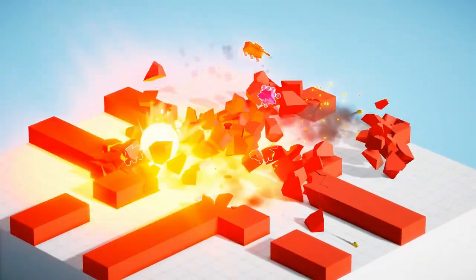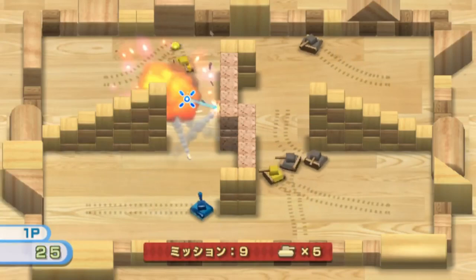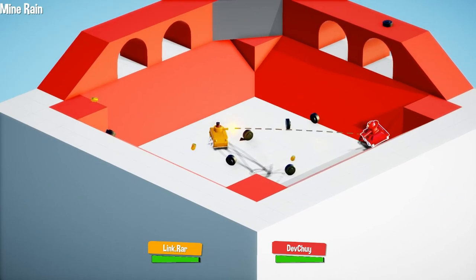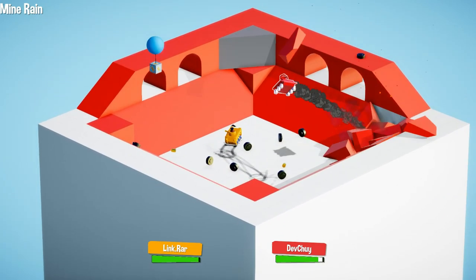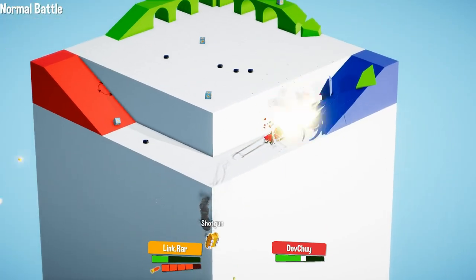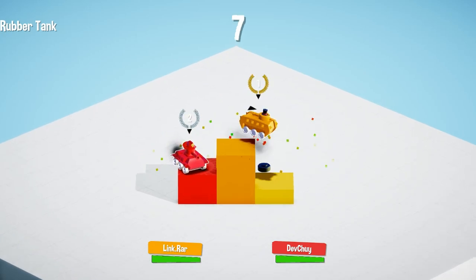Tiny Tanks is what it would look like if Gang Beasts and the tank level from Wii Play had a child. It's a party game where up to four players drive around a small blocky level and shoot at each other and try to either kill the other players or knock them off the map. The last tank standing wins the round, and the tank with the most points at the end of the game wins.